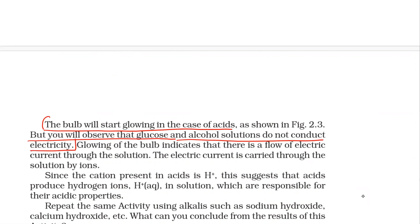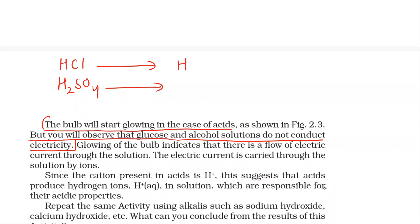Glowing of the bulb actually indicates that there is flow of electric current. Now why does electric current flow in some cases and not in others? In the case of acids like hydrochloric acid and sulfuric acid, acids dissociate — meaning they divide into ions or they give H⁺ ions. So HCl dissociates into H⁺ ion and Cl⁻ ion.